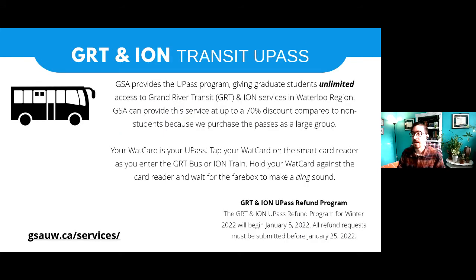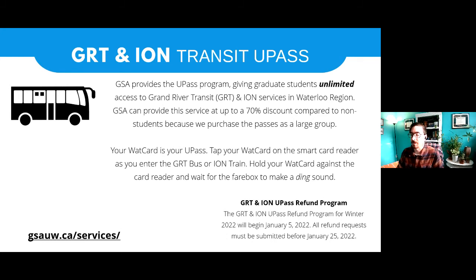The Grand River Transit and ION pass provides unlimited access to Grand River Transit and ION services throughout Waterloo Region. If you were not a student buying an annual pass compared to being a student, you get about a 70% discount through the joint purchasing of this plan that all graduate students participate in. Your WatCard, which you'll receive through the Student Life Centre, is your U-Pass — you tap that card on the bus. If you are not in Waterloo Region, there is a Grand River Transit refund program to have this fee refunded approximately once per year.